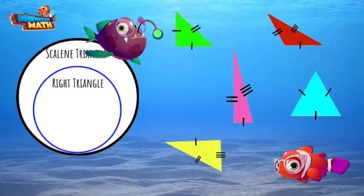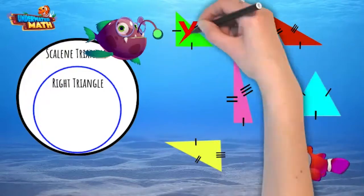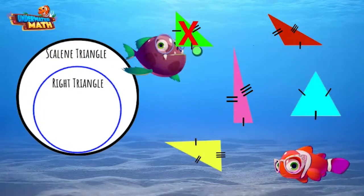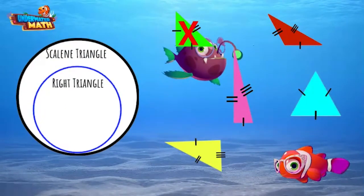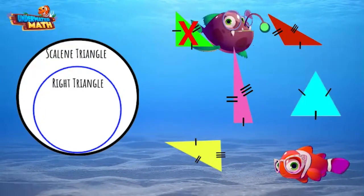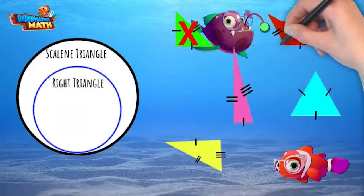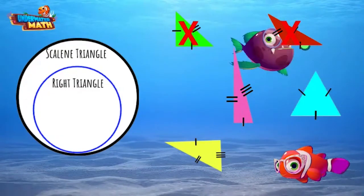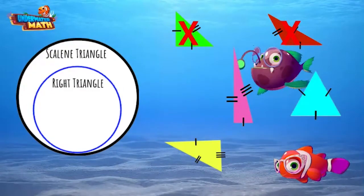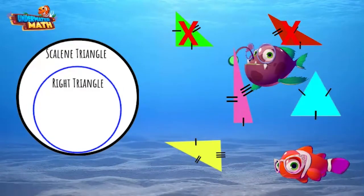I know because two sides have one tick mark and one side has two tick marks. This triangle does not fit into our organizer. The red triangle has three sides that are different lengths, but it doesn't have a right angle. This triangle fits into the scalene section of the organizer, but not in the right scalene section.